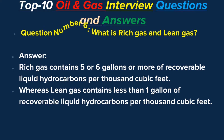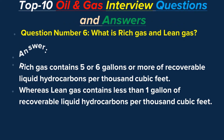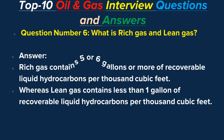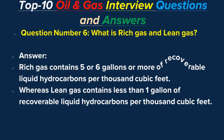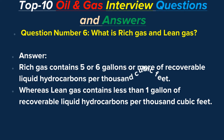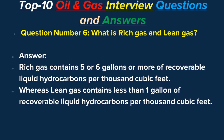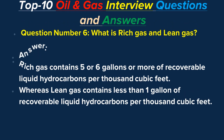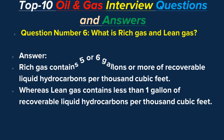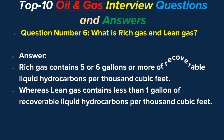Question number six: What is rich gas and lean gas? Answer: Rich gas contains 5 or 6 gallons or more of recoverable liquid hydrocarbons per thousand cubic feet, whereas lean gas contains less than 1 gallon of recoverable liquid hydrocarbons per thousand cubic feet.